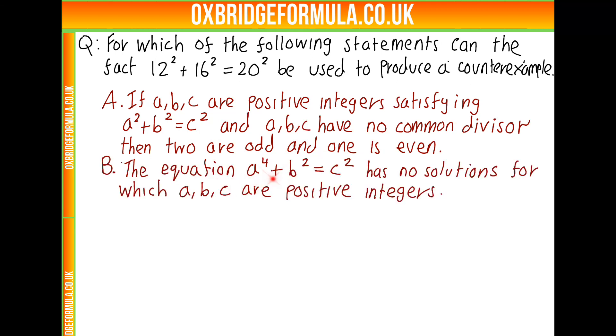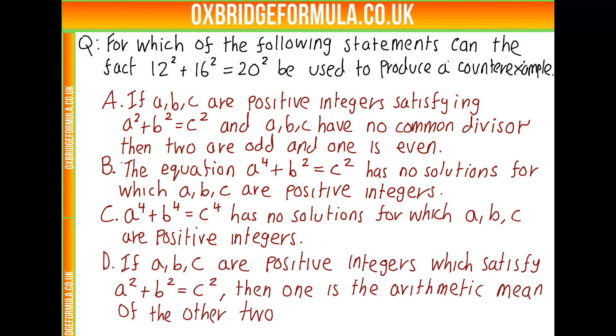Statement B: The equation A to the 4 plus B squared equals C squared has no solutions for which A, B, C are positive integers. Statement C: A to the 4 plus B to the 4 equals C to the 4 has no solutions for A, B, C positive integers.